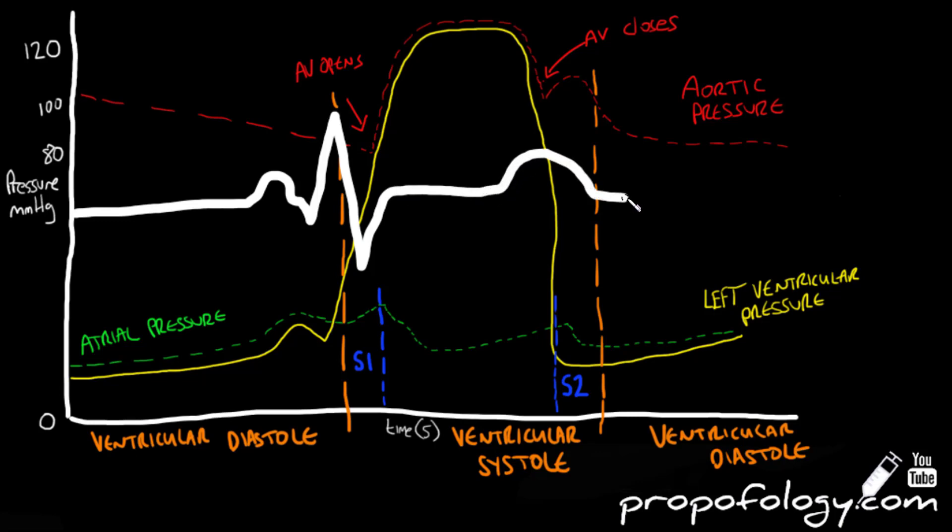Repolarization of the ventricles is a slower process and this is represented by the T wave and is complete by the second S2 heart sound just after the closure of the aortic valve. An ECG trace I find is useful because it puts the pressure changes in context of electrical changes in the heart, which as clinicians is what we're most used to looking at.